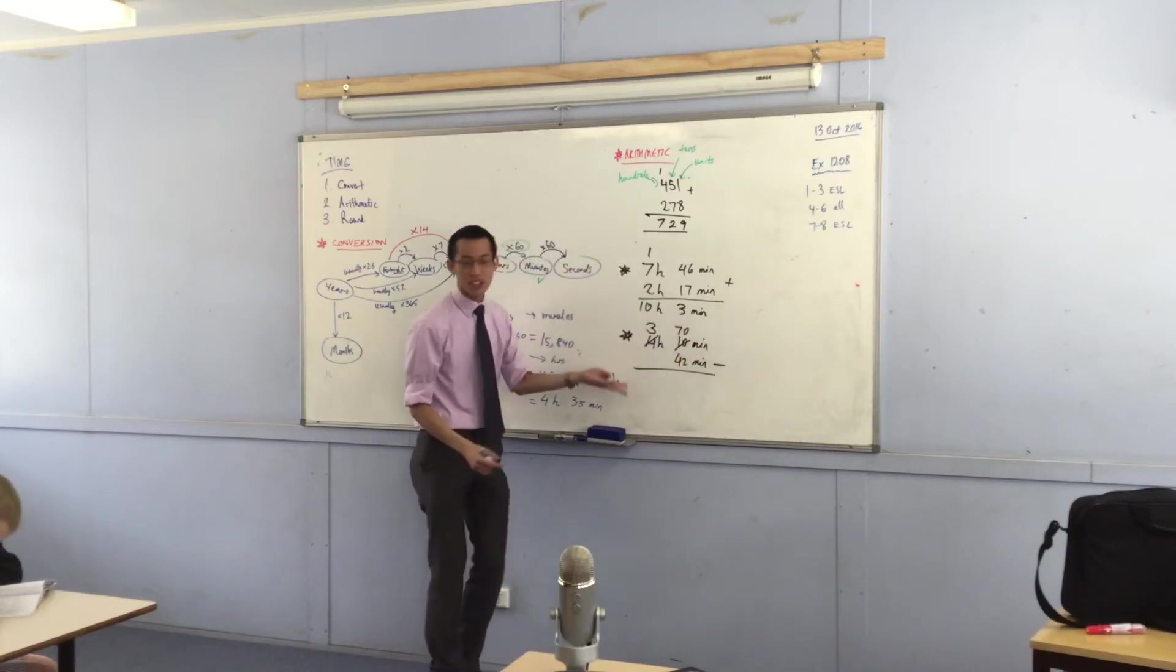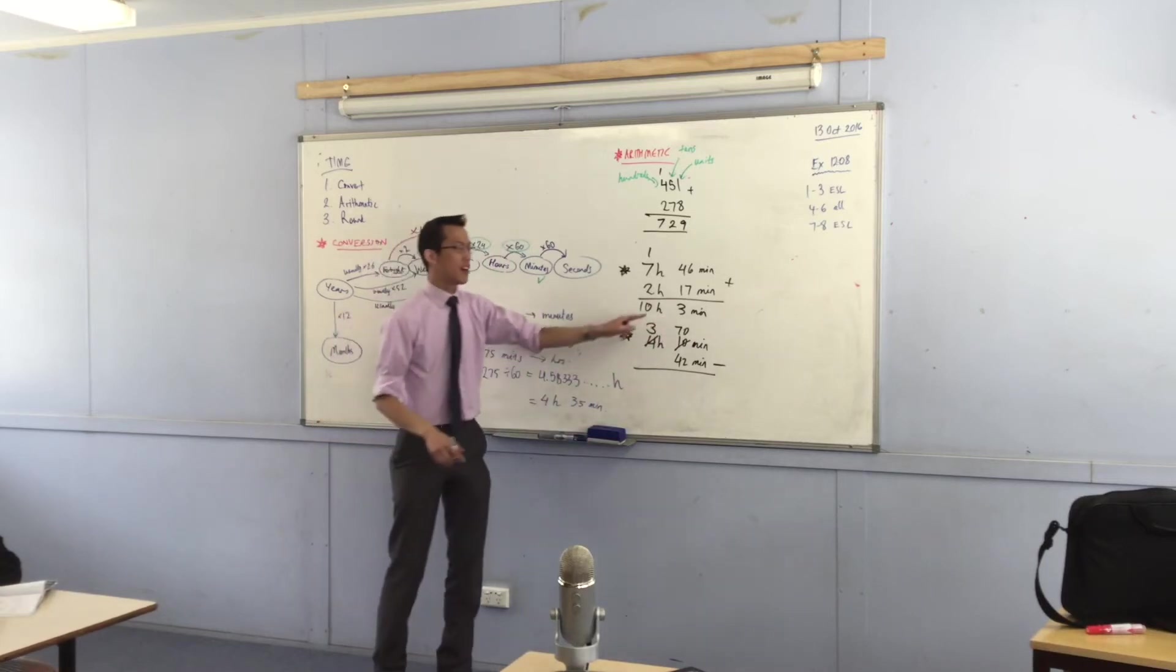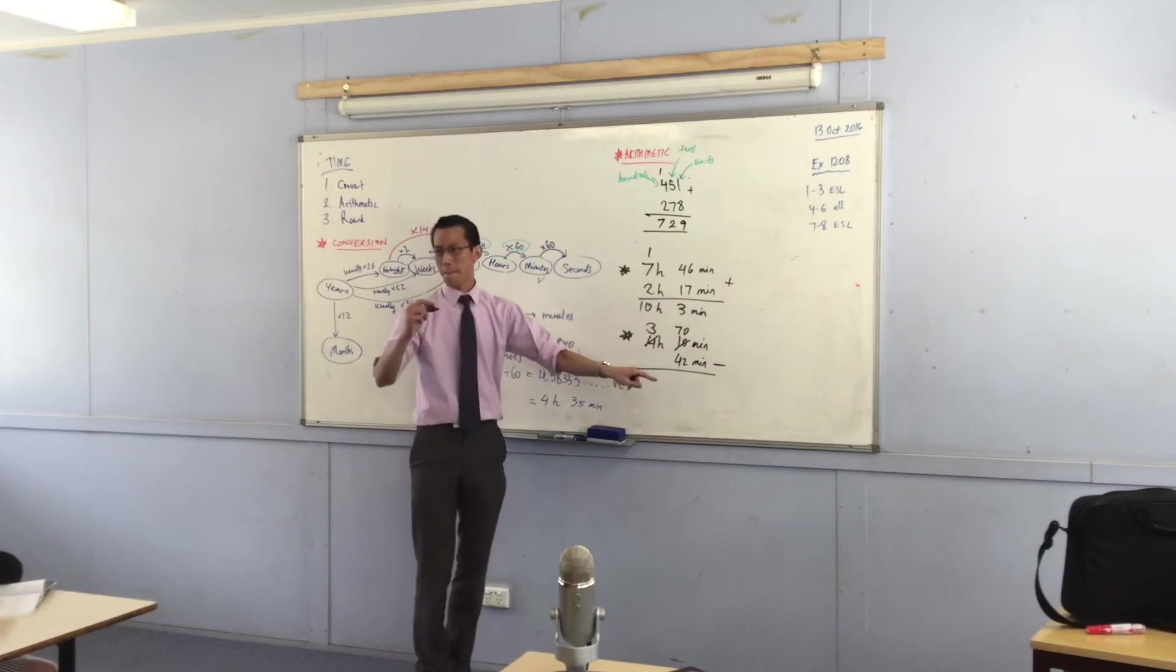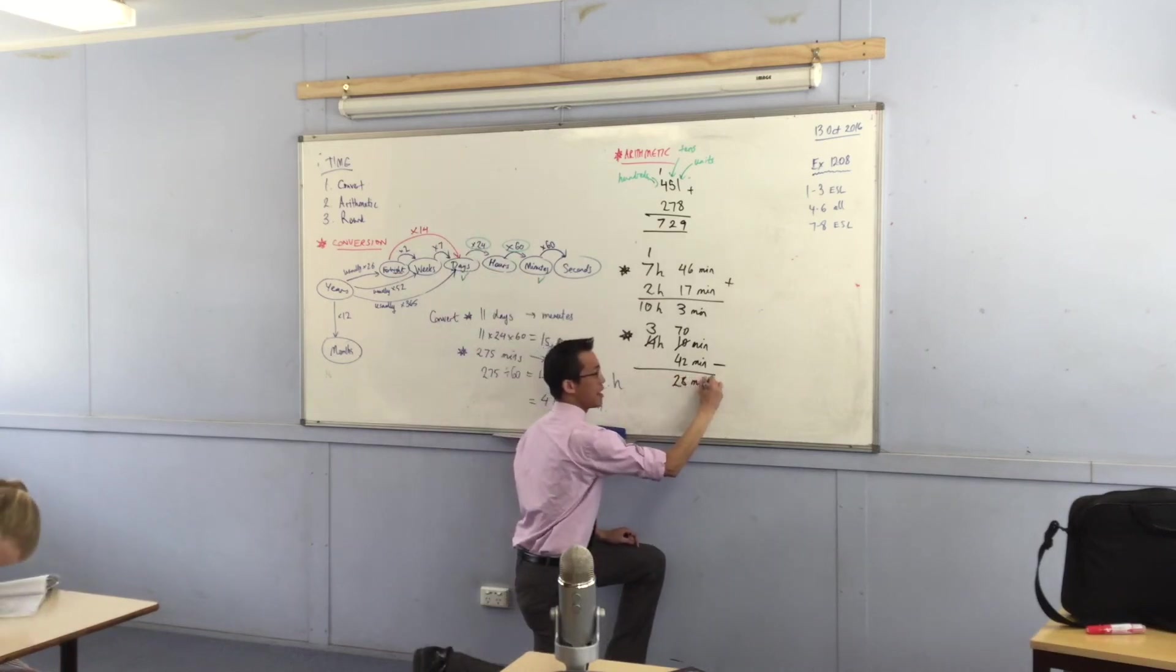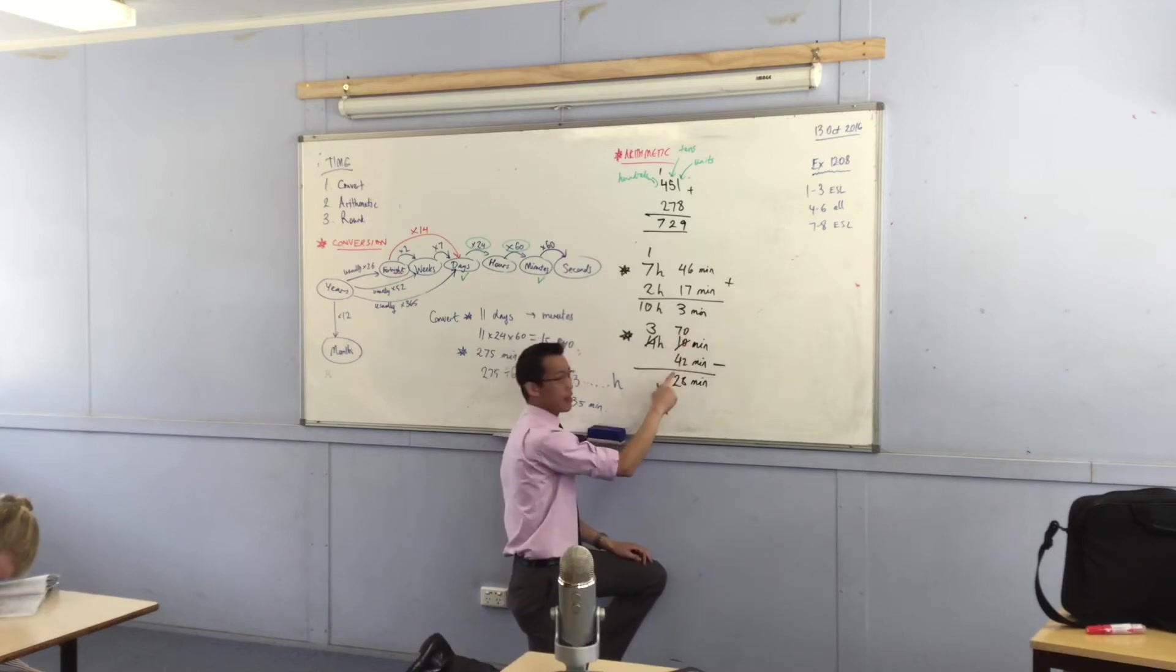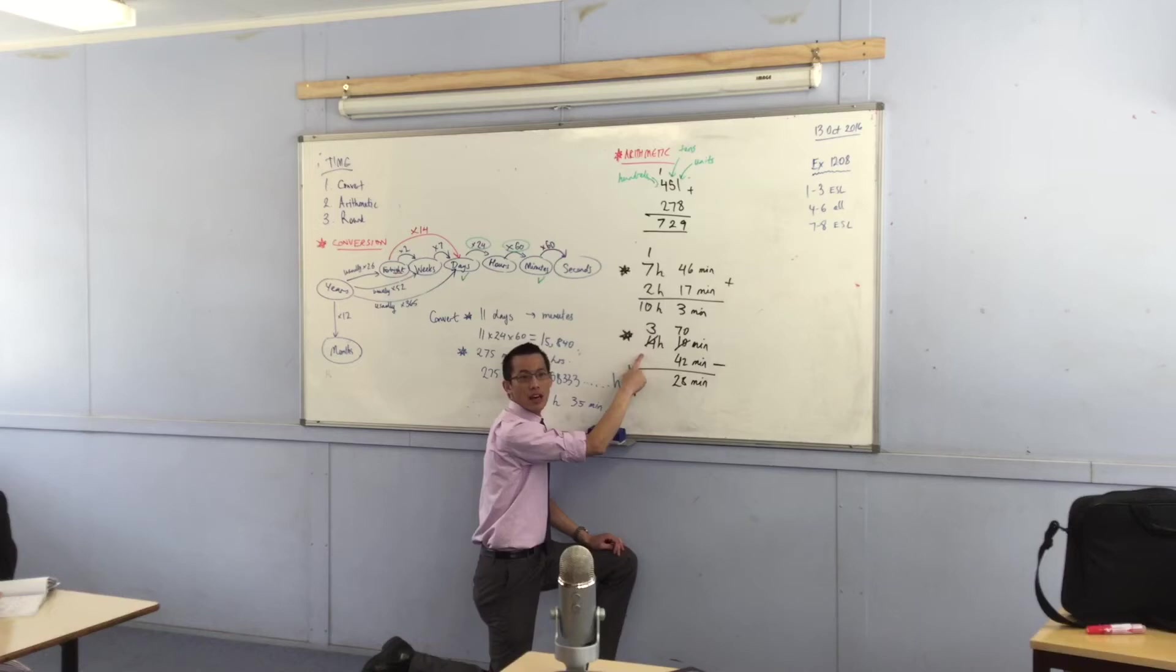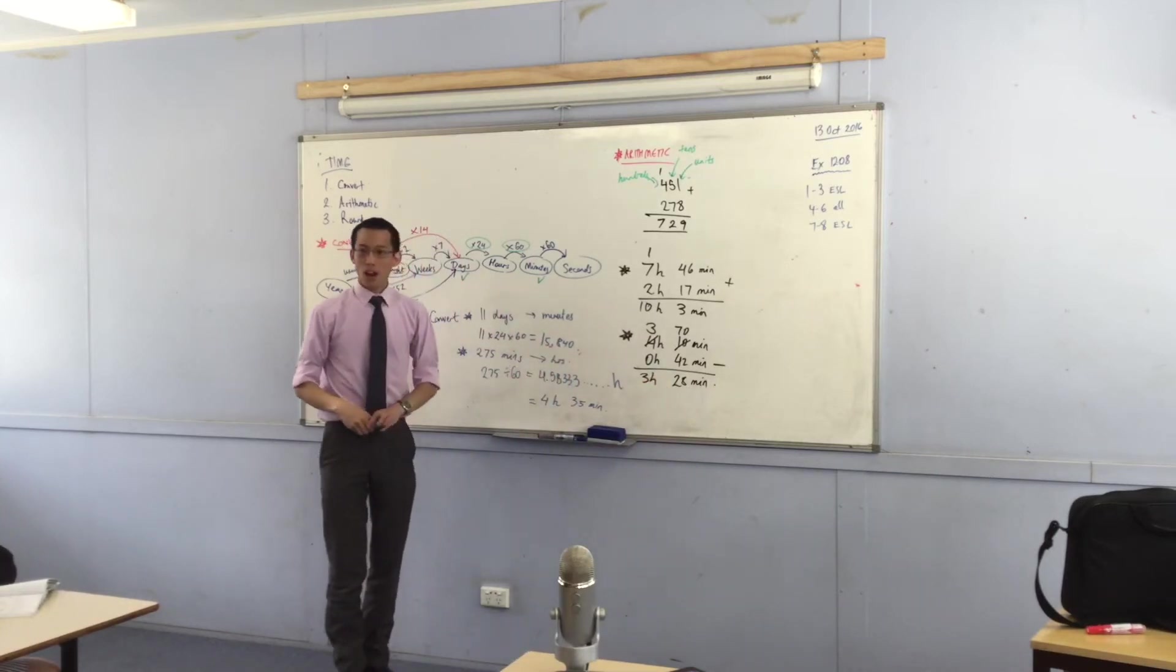So this is 70 now. Now of course you wouldn't say 3 hours and 70 minutes, because people would look at you and say, what kind of watch are you reading? But this helps us do the subtraction. 70 take away 42 is 28. And in fact, over here, even though I haven't written any hours here, what that means is it's 0 hours. So 3 take away 0 is 3. And you're done. Make sense?